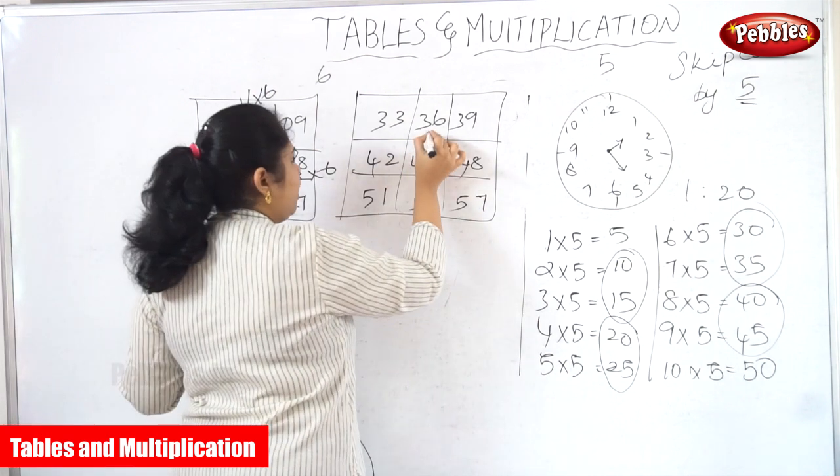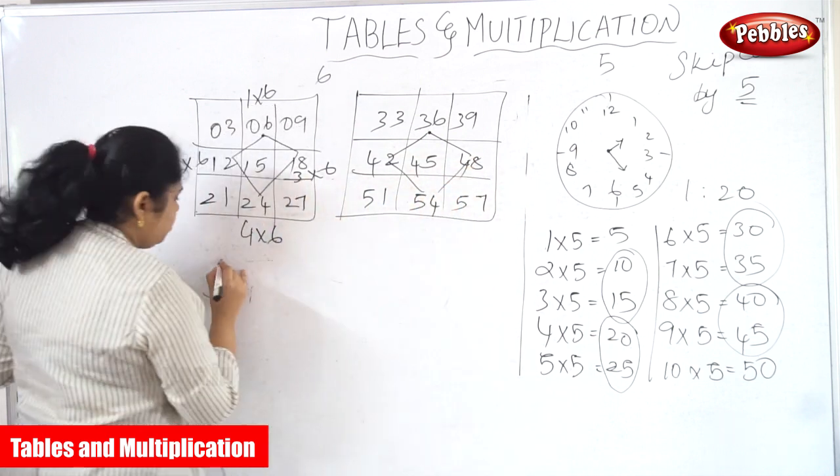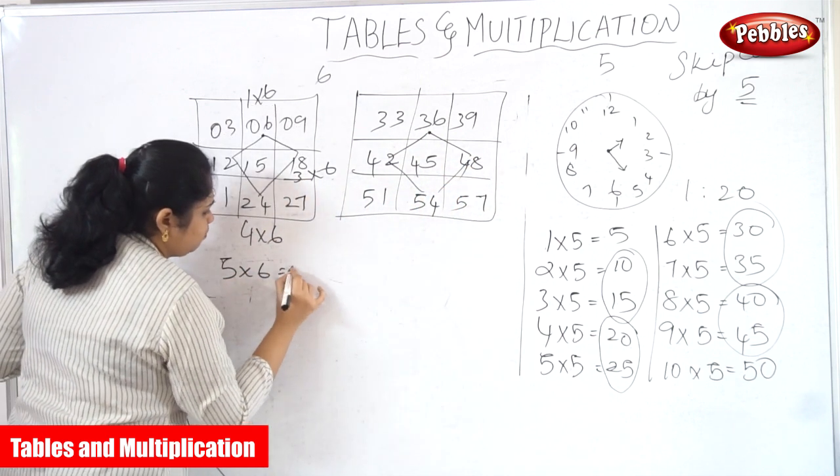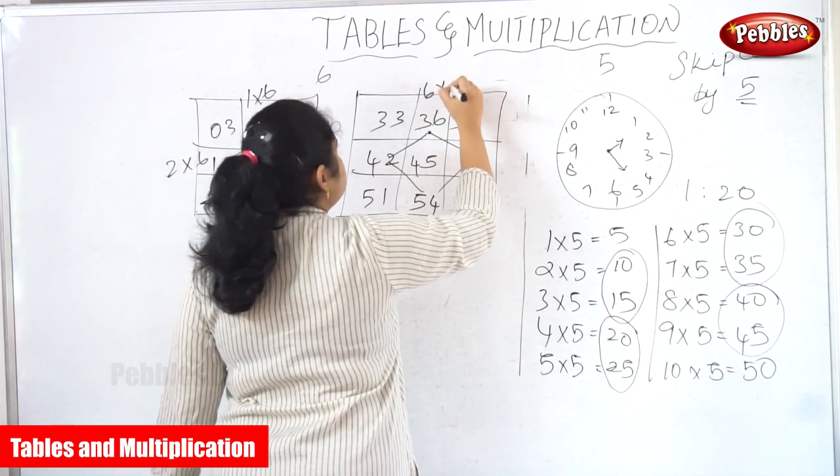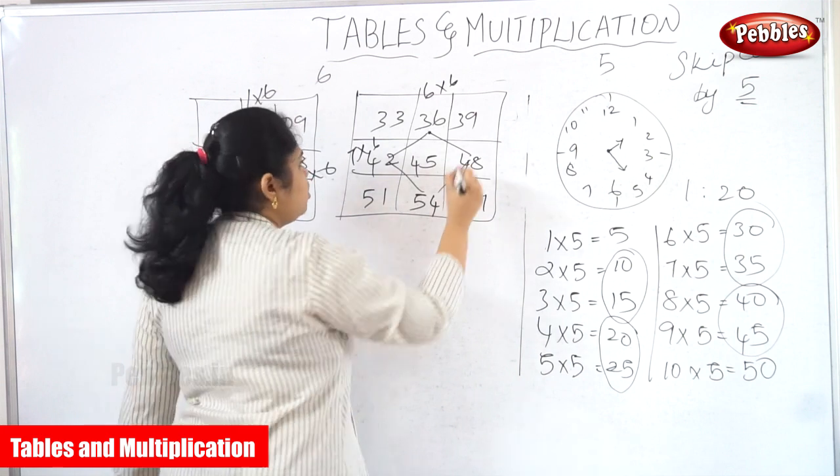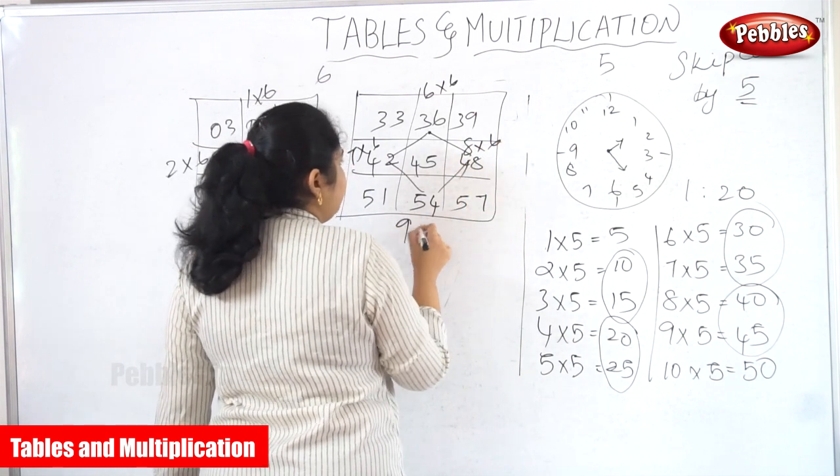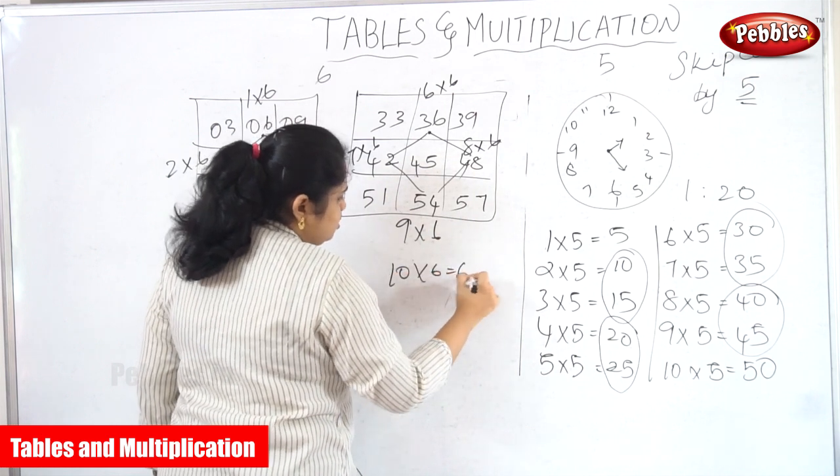As here, I am going to make the center point. Here 5 into 6 is 30. We are going to write it here. Next 6 into 6 is 36. 7 into 6 is 42. 8 into 6 is 48. 9 into 6 is 54. Of course, 10 into 6 is 60.